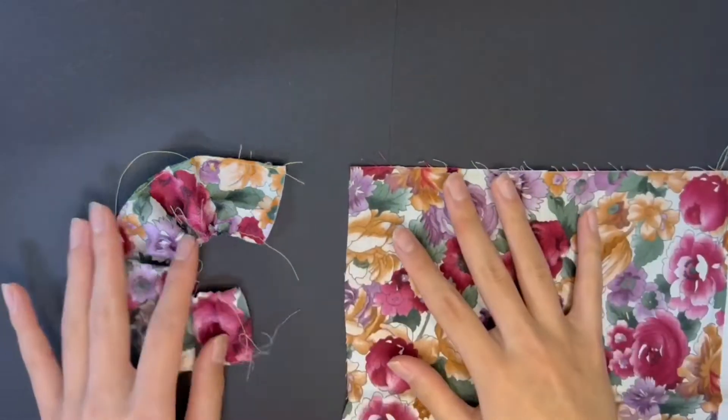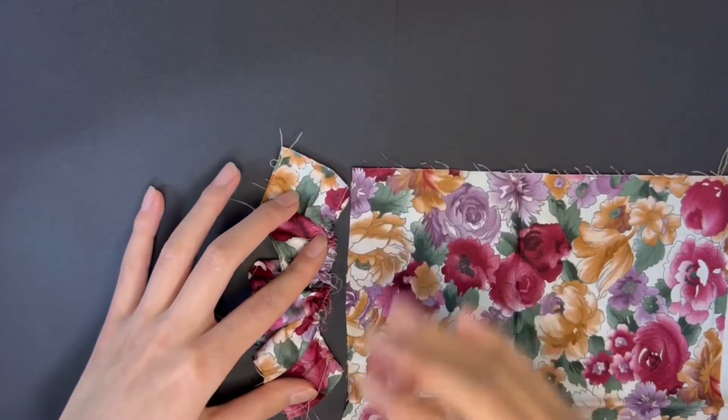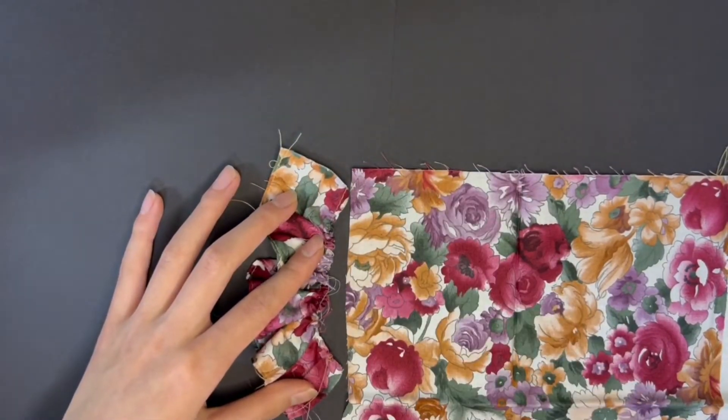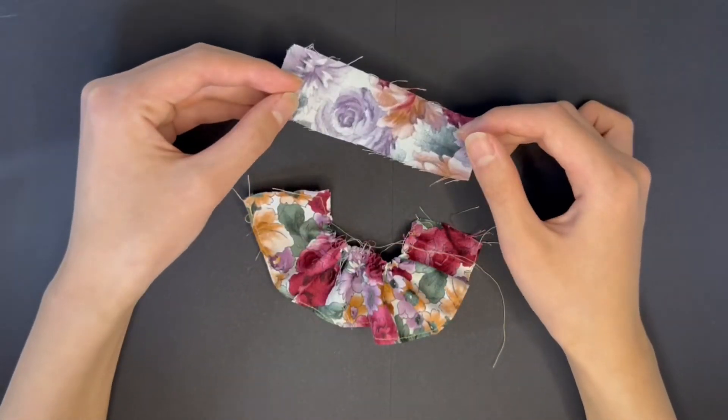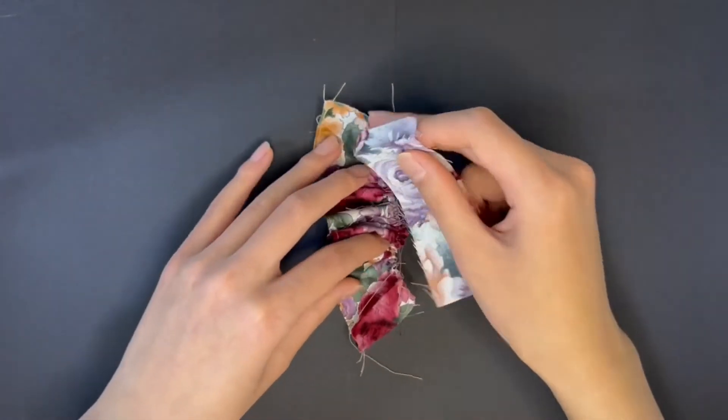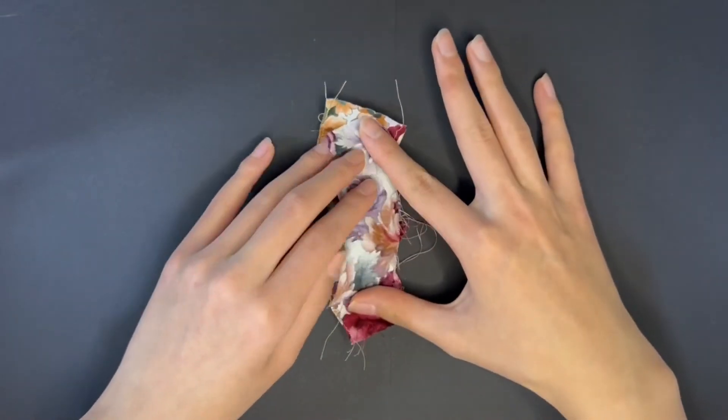After evening out the wrinkles for utter perfection, I line up the skirt and the will be top of the dress to estimate how long the bust should be. Then I take the top piece and the skirt piece, stacking them so the good sides face each other, and sew across.